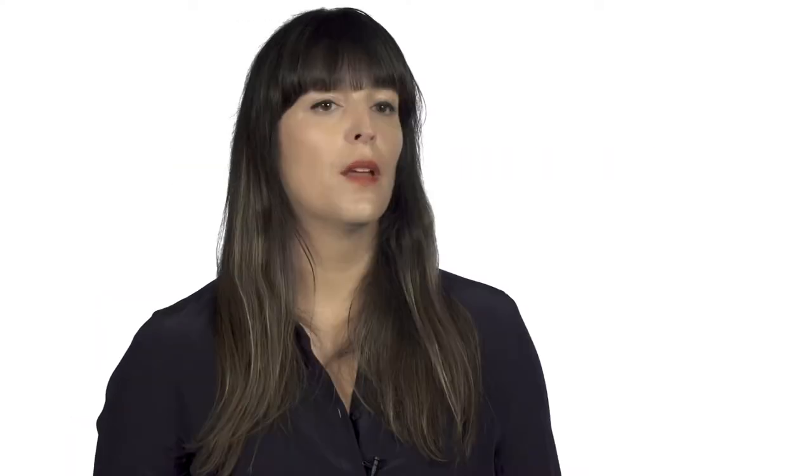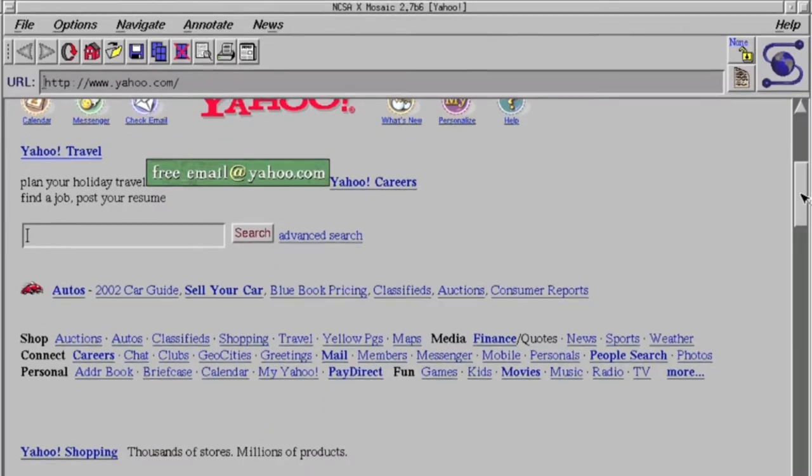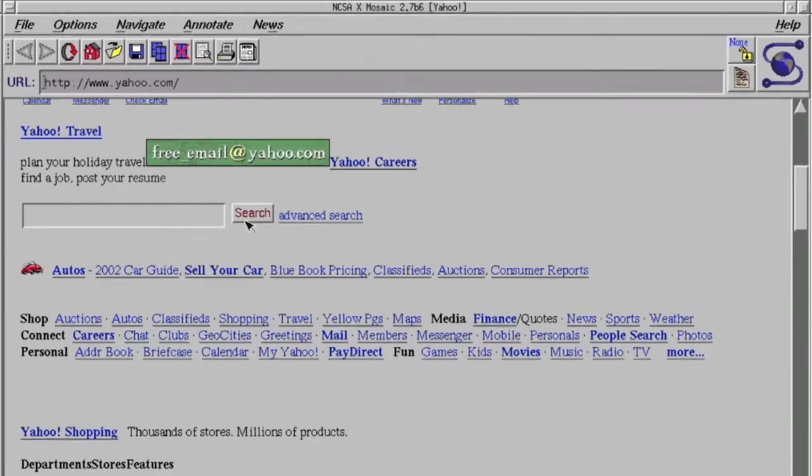The internet has been around since the 1960s. However, in 1989 the World Wide Web was invented. With the invention of the World Wide Web, web-based browsers like Mosaic and Netscape were introduced, and these were browsers that anybody could use, and the internet became a truly democratic medium.